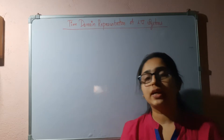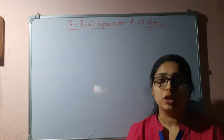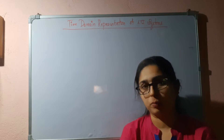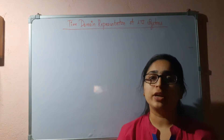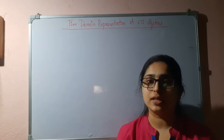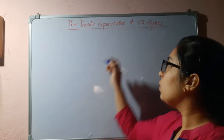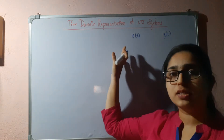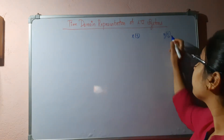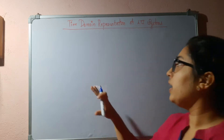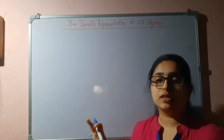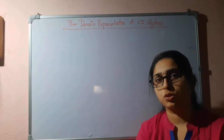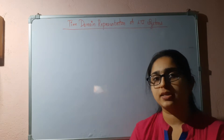In this video, let us study about the time domain representation of the LTI system. Time domain representation is where we relate the output to the input when both signals are represented as a function of time — x(t) is the input signal and y(t) is the output signal. It is very easy to analyze the LTI system because of the superposition property. They exhibit the superposition property, and that is why it is easy to analyze the LTI system.